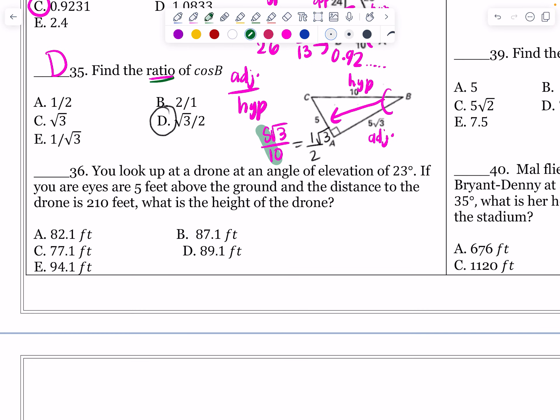Number 36 is going to be an angles of elevation and depression problem. It says, you look up at a drone at an angle of elevation of 23 degrees. So we've got the ground, and you look up at this drone, which is obviously in the air flying. So I'm just going to put an X there at an angle of elevation. So here's your line of sight. You look up at it at an angle of 23 degrees. So here's my right angle. Here's my angle of elevation, 23 degrees. If your eyes are five feet above the ground, so if you're like me, I'm not super tall, five feet above the ground, I'm going to have to add five to my final height of this drone. So there's my plus five here.